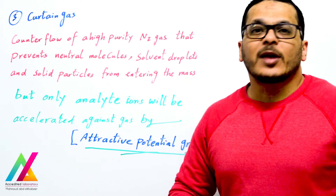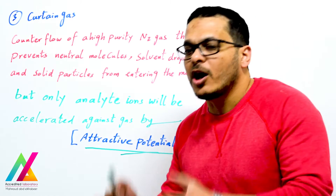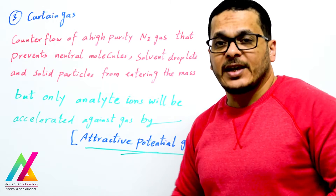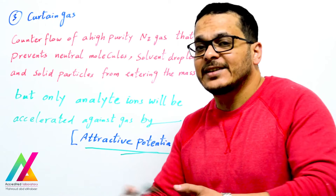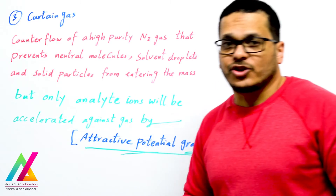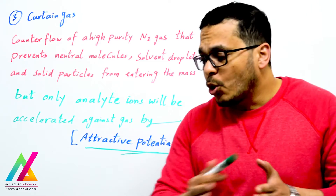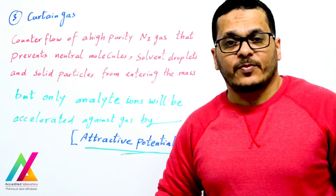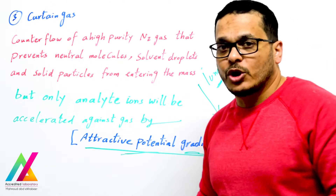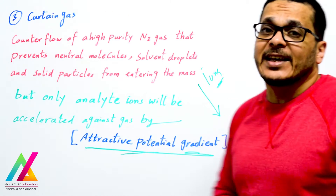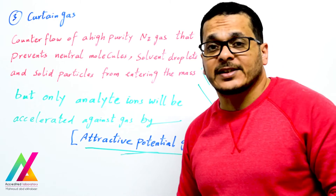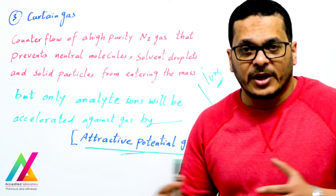Curtain gas is a counter-flow of high-purity nitrogen gas that prevents neutral molecules, solvent droplets, and solid particles from entering the mass analyzer. Only analyte ions will be accelerated against the gas to the mass analyzer by an attractive potential gradient — meaning potentials applied to all parts of the mass spectrometer, from ion source to detector, decrease gradually to help ions transfer to the detector. The name 'curtain gas' is used in AB Sciex instruments; in Agilent instruments, for example, it is called 'drying gas.' The name differs between instruments but the function is the same.